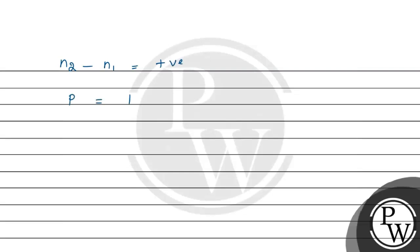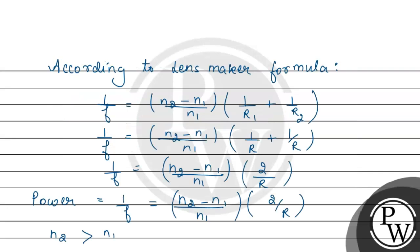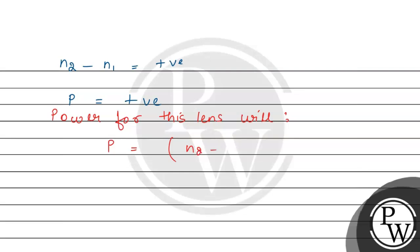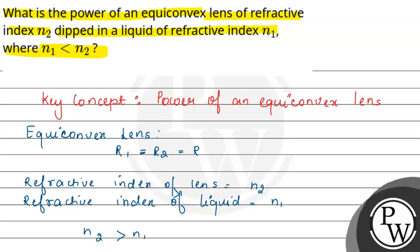Power is equal to N2 minus N1 by N1, into 2 by R. And this value is a positive value, which means that this lens will behave like a converging lens. So, hope you understood it well. Best of luck.